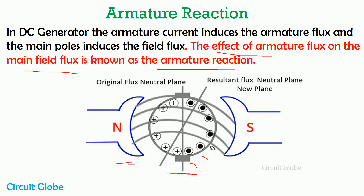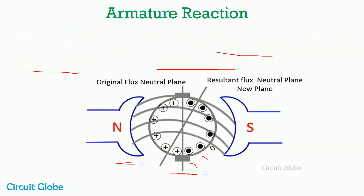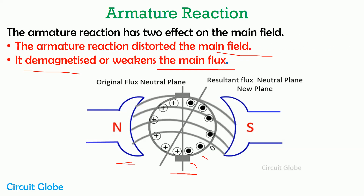The armature reaction has generally two effects on the main field flux. The first one is that the armature reaction distorts the main field, and the second one is that it demagnetizes the main field flux. If armature reaction distorts the main field, that means the total voltage generated in the DC generator will have its magnitude reduced. So we can say that armature reaction reduces the generated voltage of the DC generator.